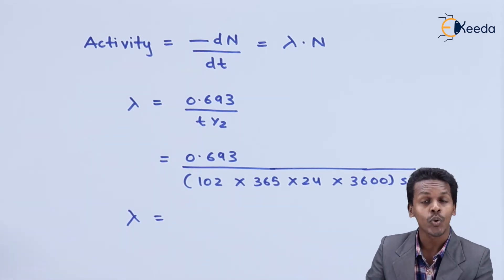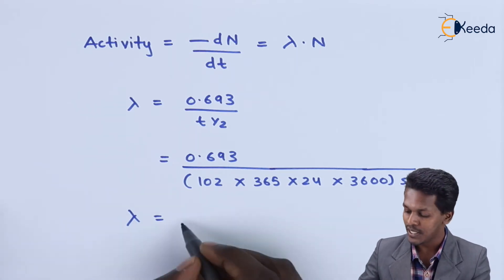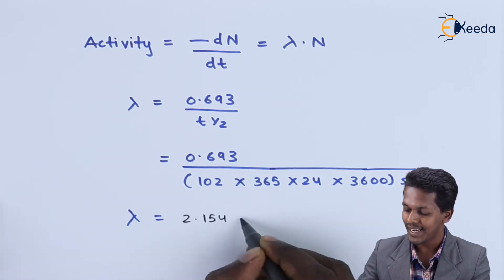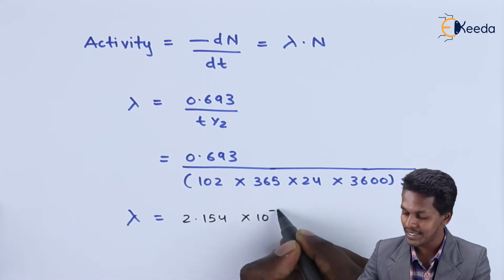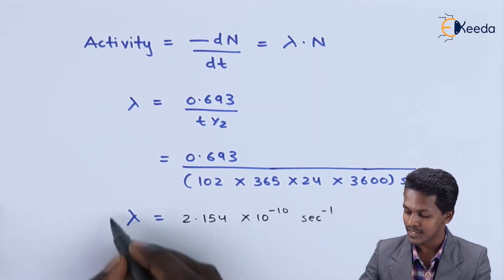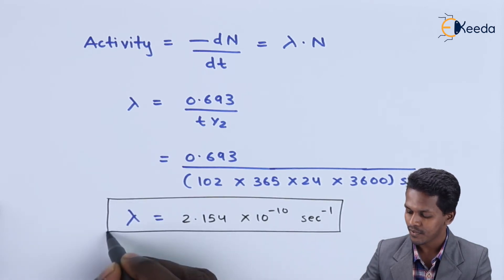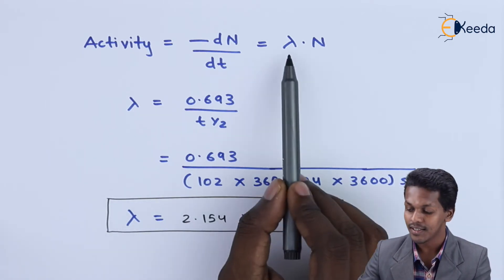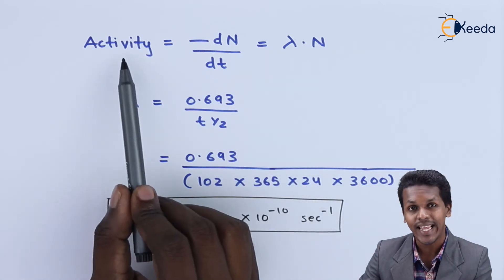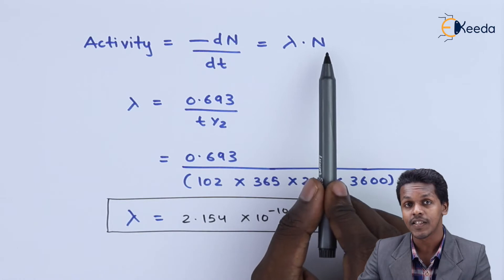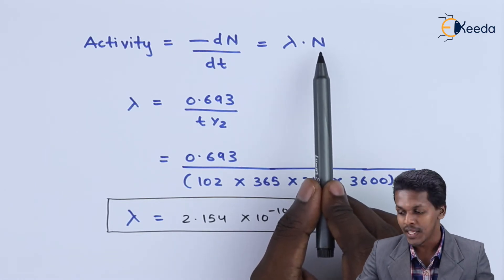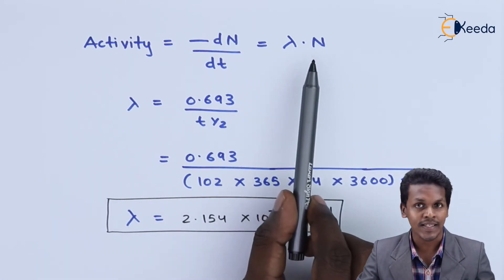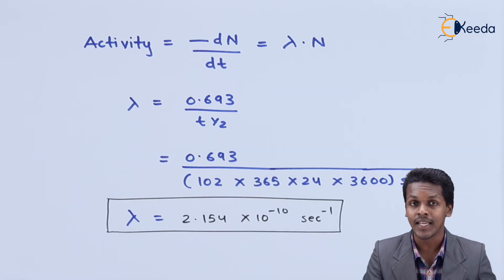The decay constant is found to be 2.154 × 10⁻¹⁰ s⁻¹. Now, to find the activity using A = λN, we also need the number of atoms N present in 2 milligrams of polonium, so let us calculate that next.